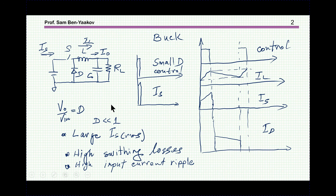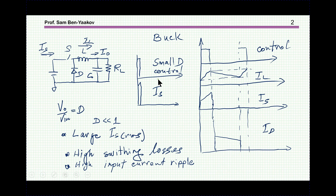Let's consider the case in which the duty cycle is small. Here I'm showing the inductor current — this is when the switch is on, this is when the switch is off. This is the control signal, this is the switch current, and this is the diode current. When the duty cycle is small, then this becomes narrower and narrower, and we are going to get from the input sharp pulses like these.